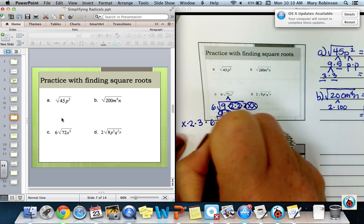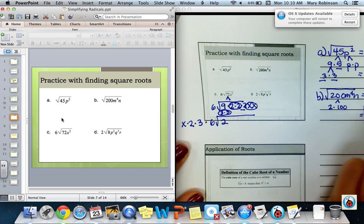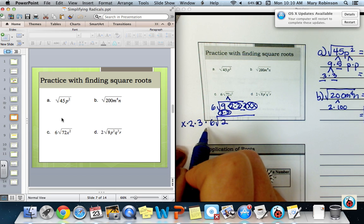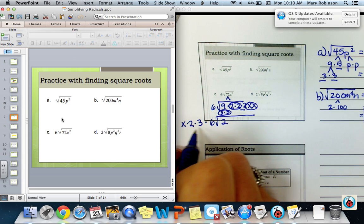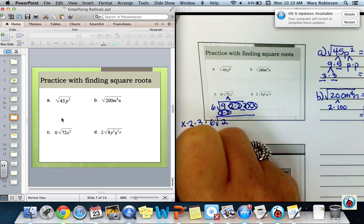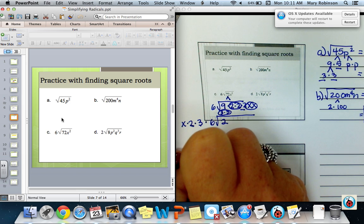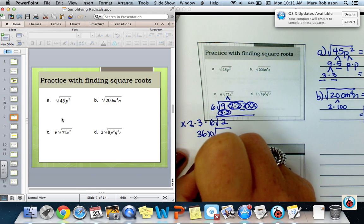So we want to list all those out front, the 3, the 2, and the x. And anything that remains, this 2 here, stays under my radical. Whatever I have pulled out needs to be multiplied. So notice I have 2 times 3, which is 6. And 6 times 6 is 36. So I have 36x. I always want to make sure I put my coefficient in front of my variable. So 36x square root of 2 is my answer.